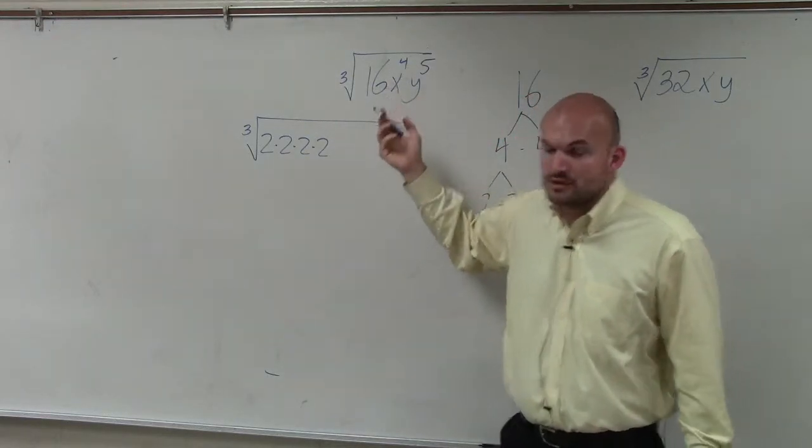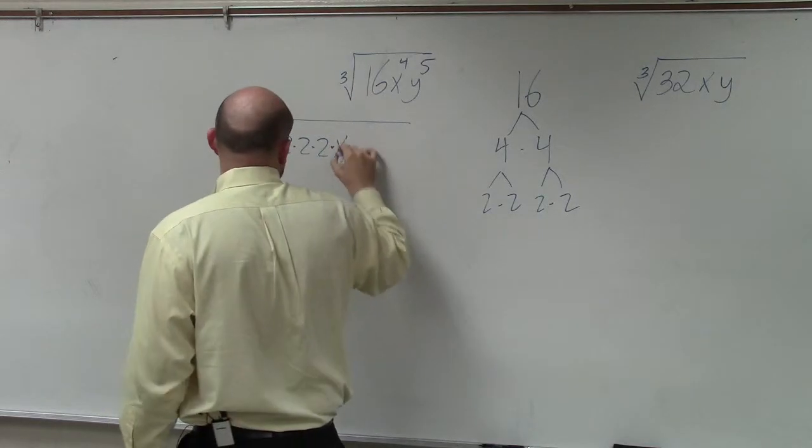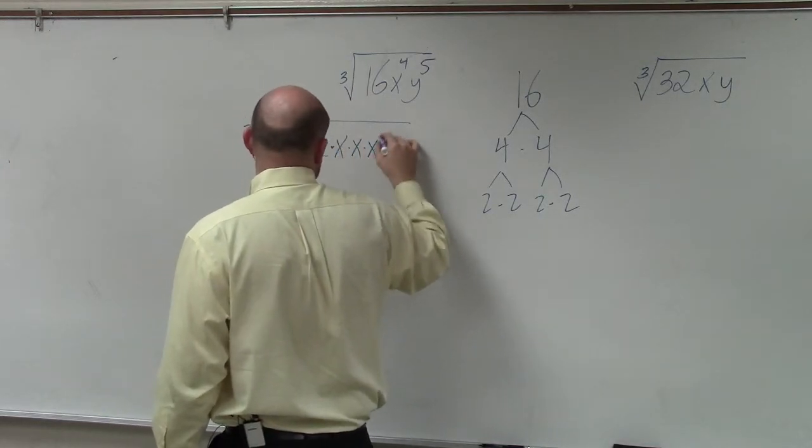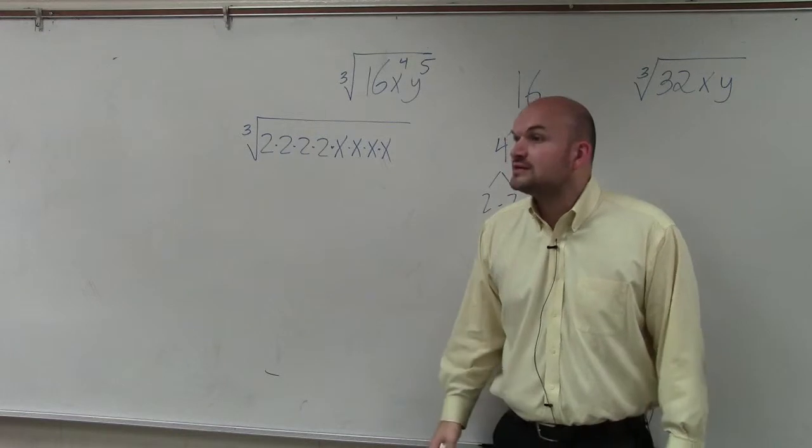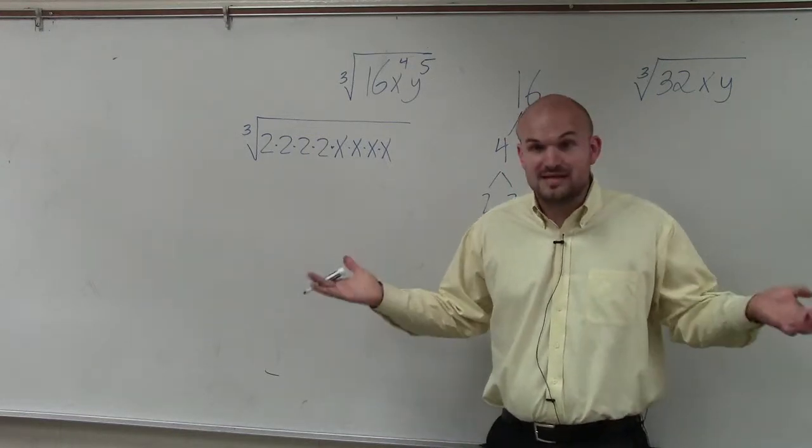Now let's write out x to the fourth. And if you guys want to write them out, that's perfectly fine. It makes sense. It just takes a little bit longer. But do you guys agree that x to the fourth is the same thing as x times x times x times x?